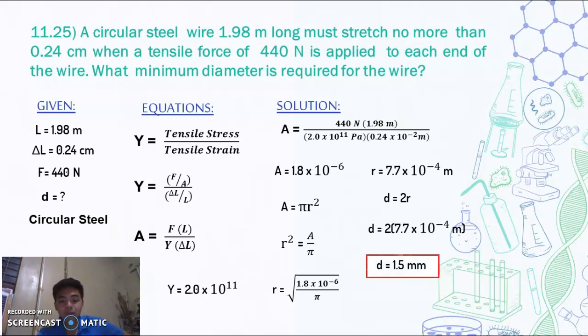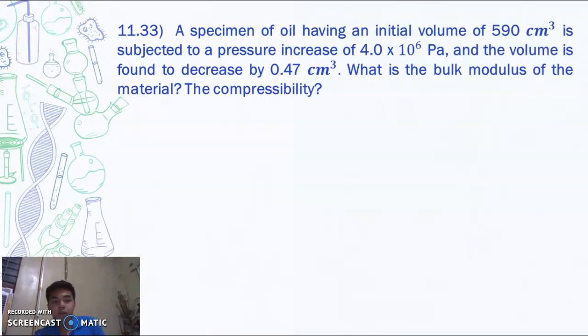Next, for problem 11.33. A specimen of oil having an initial volume of 590 centimeter cubed is subjected to a pressure increase of 4.0 times 10 to the 6 Pascal. And the volume is found to decrease by 0.47 cubic centimeter. What is the bulk modulus of the material? And what is the compressibility? So for our given, we have a volume of 590 cubic centimeter, a pressure of 4.0 times 10 to the 6 Pascal, and the change in volume of 0.47 cubic centimeter.